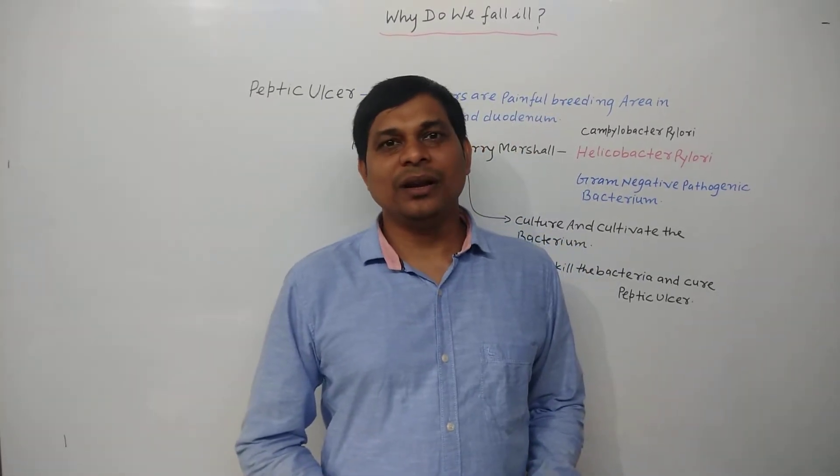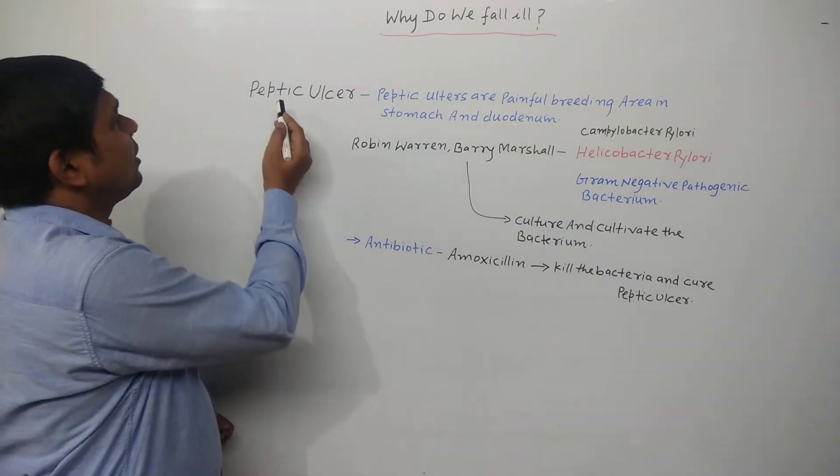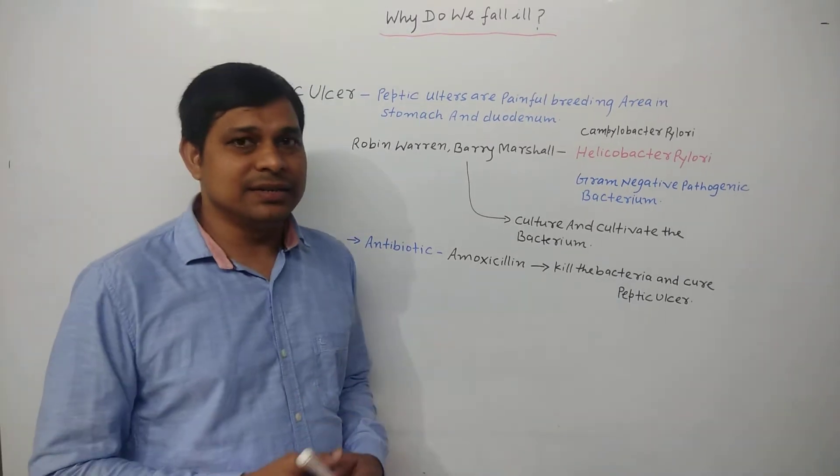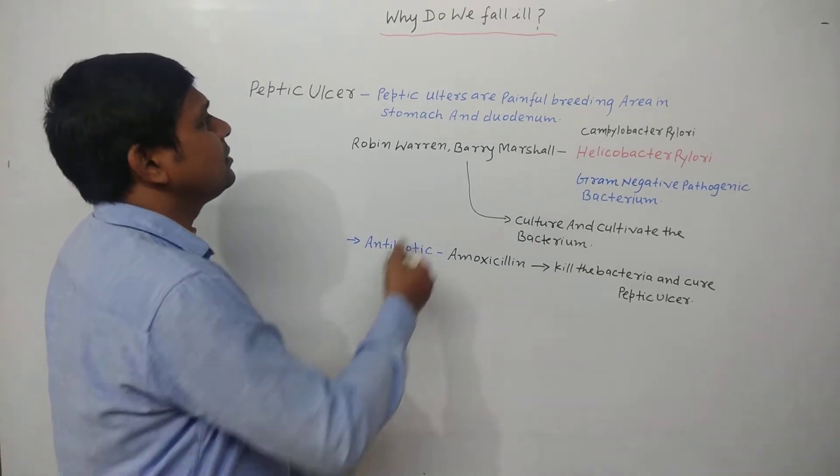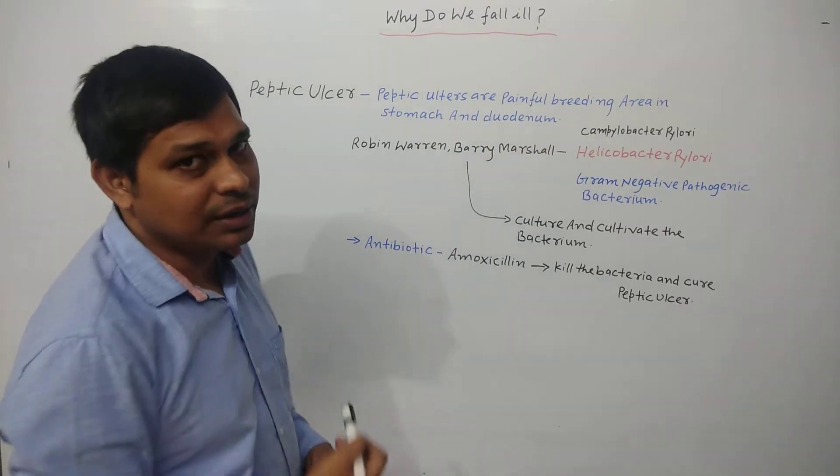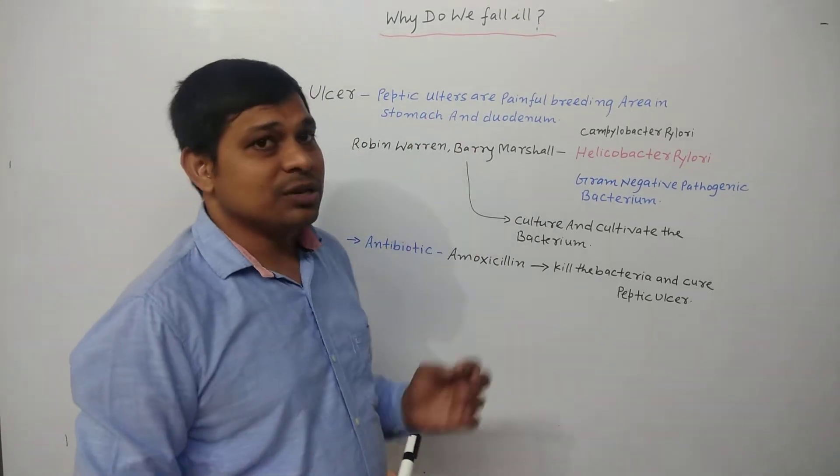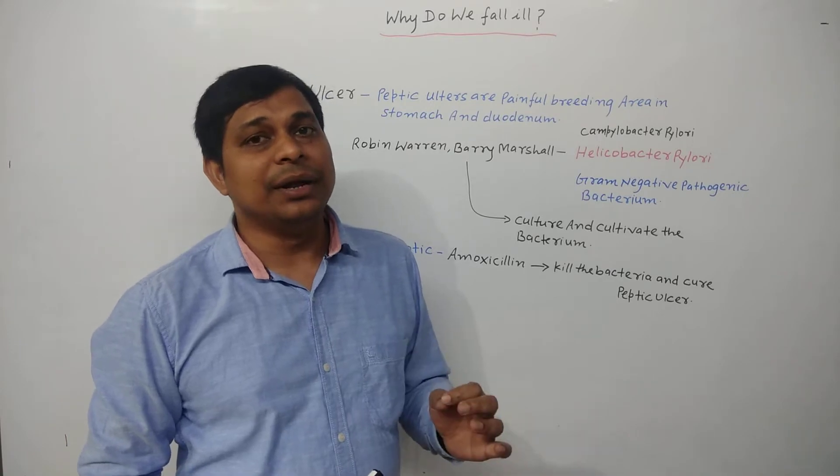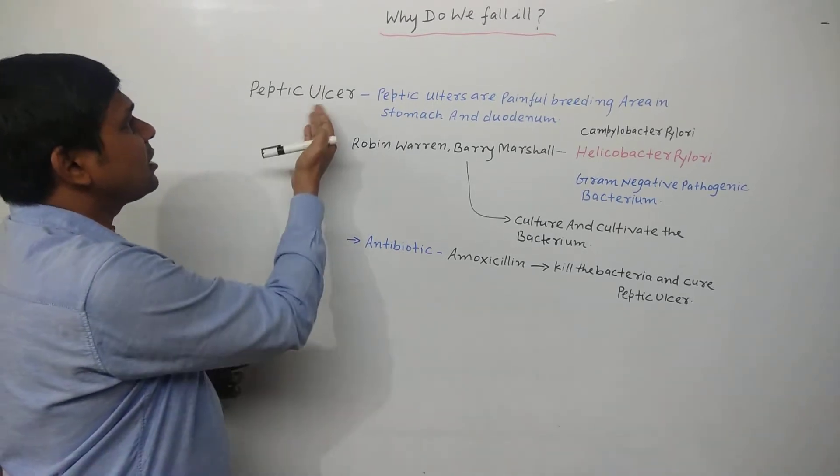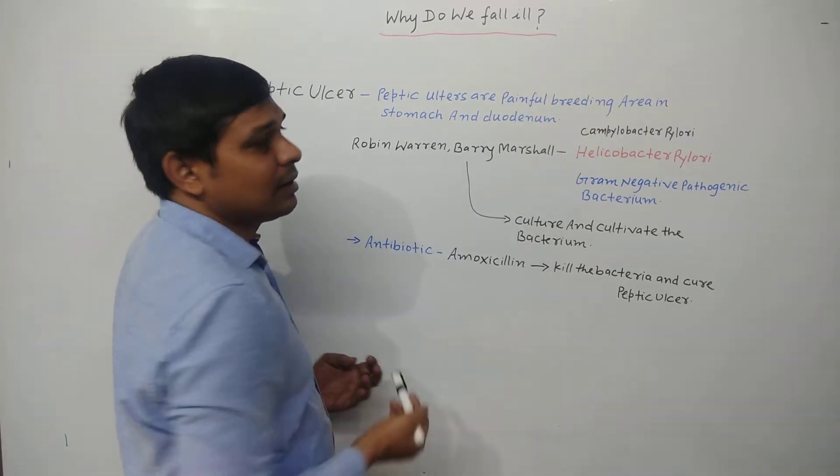Hello friends, welcome to RKG Biology Tutorial. Peptic ulcer is a bacterial disease. It is a painful bleeding area in the stomach and duodenum of the small intestine. Duodenum is the part of the small intestine. In the stomach, there is a certain bleeding painful area that is considered as peptic ulcer. Ulcer means wound or injury, and that is bleeding.